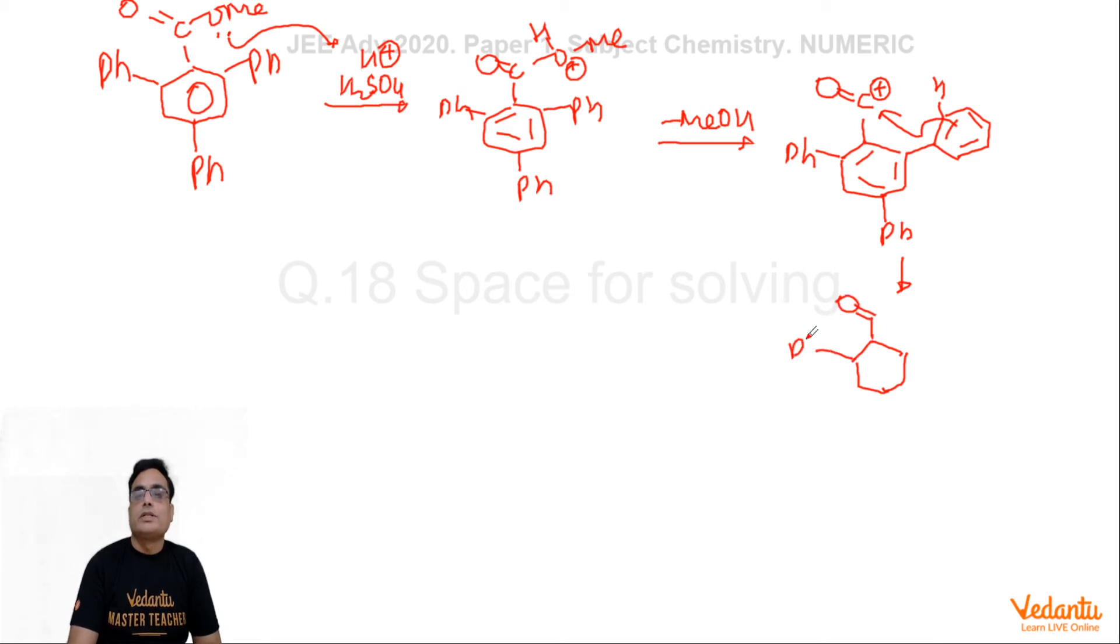So now the C double bond O already attacked on the phenyl ring of the adjacent position and you are actually getting this kind of substance. This is carbocation formed.